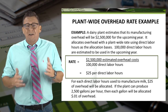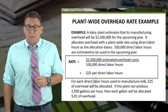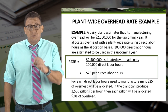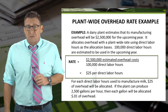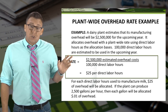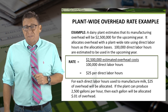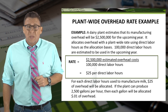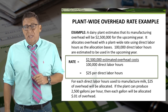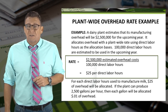This determines that $25 of overhead will be allocated to the gallons of milk for every one hour of direct labor hours used to manufacture the milk. Assume the plant can produce 2,500 gallons per hour — then each gallon will be allocated one cent of overhead.